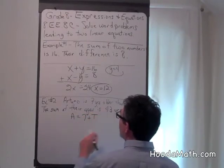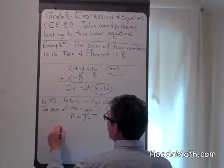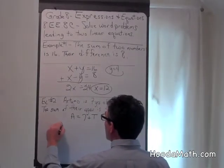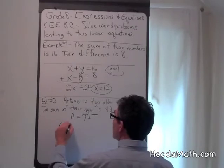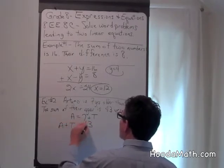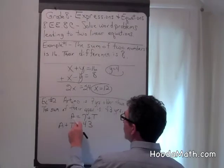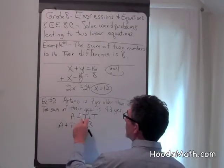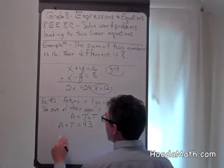The sum of their ages is 43. So a plus t equals 43. We can substitute every time we see a, 7 plus t. So instead,